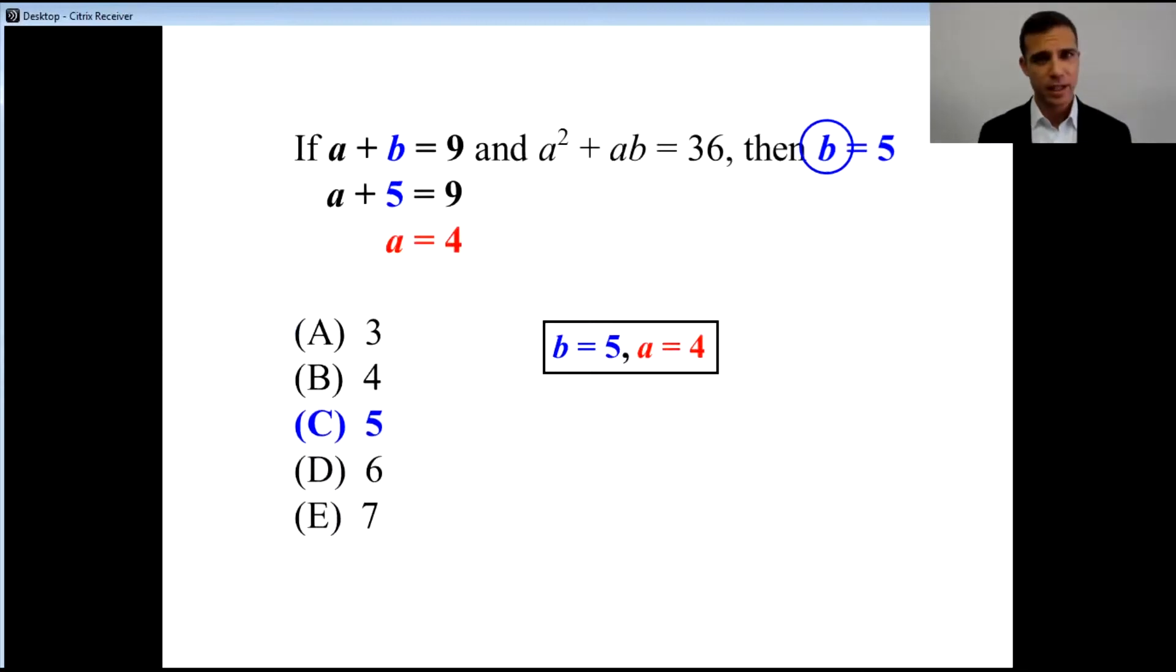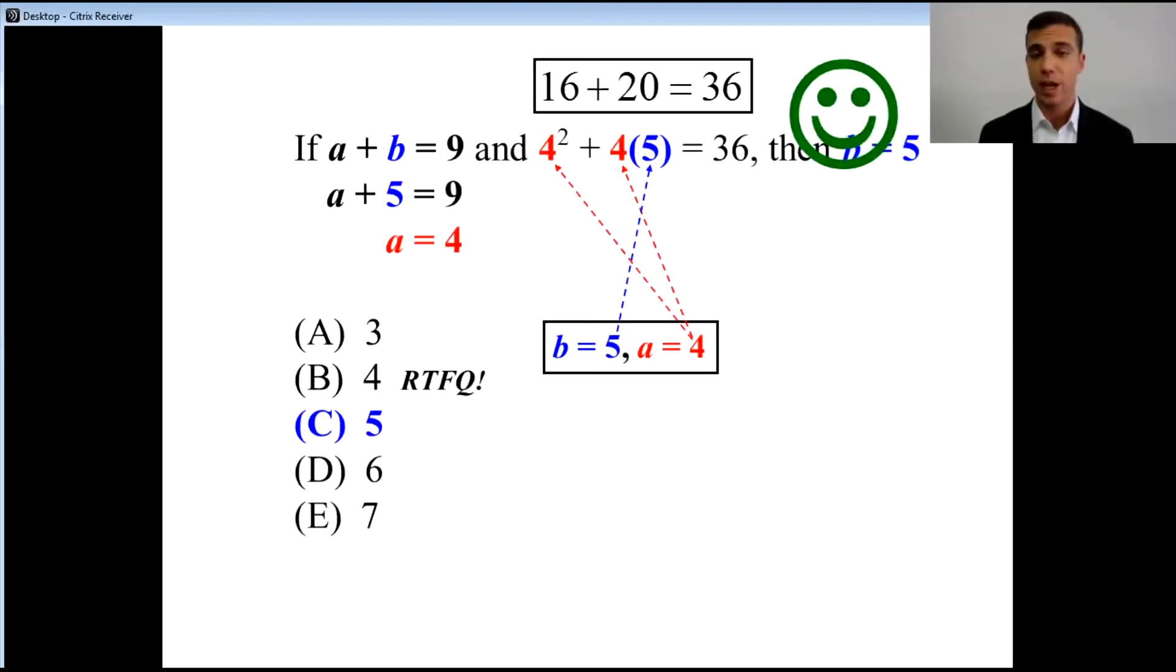But we're not done yet. Just because the first part of the problem worked when we put b equals 5 and it told us a equals 4, we now have to see if the second part of the problem fits with the values we've got. Well, if a equals 4, we've got 4 squared plus 4 times b, and b is 5. So what we have here is 4 squared plus 4 times 5. Well, 4 squared is 16, 4 times 5 is 20. That means we put them together and we get 36, and we're done.